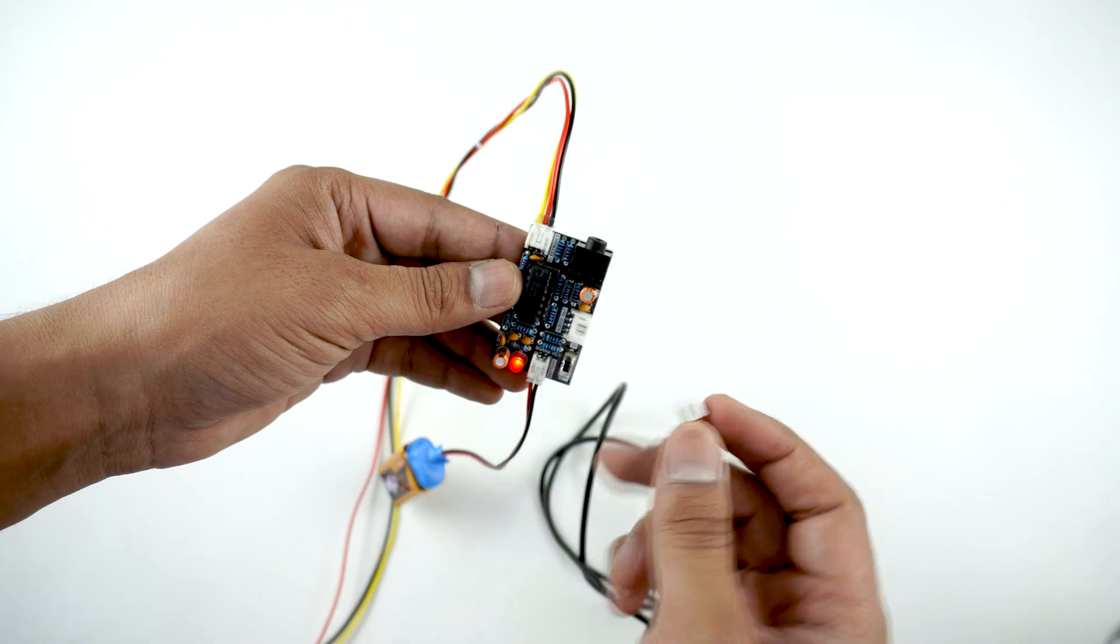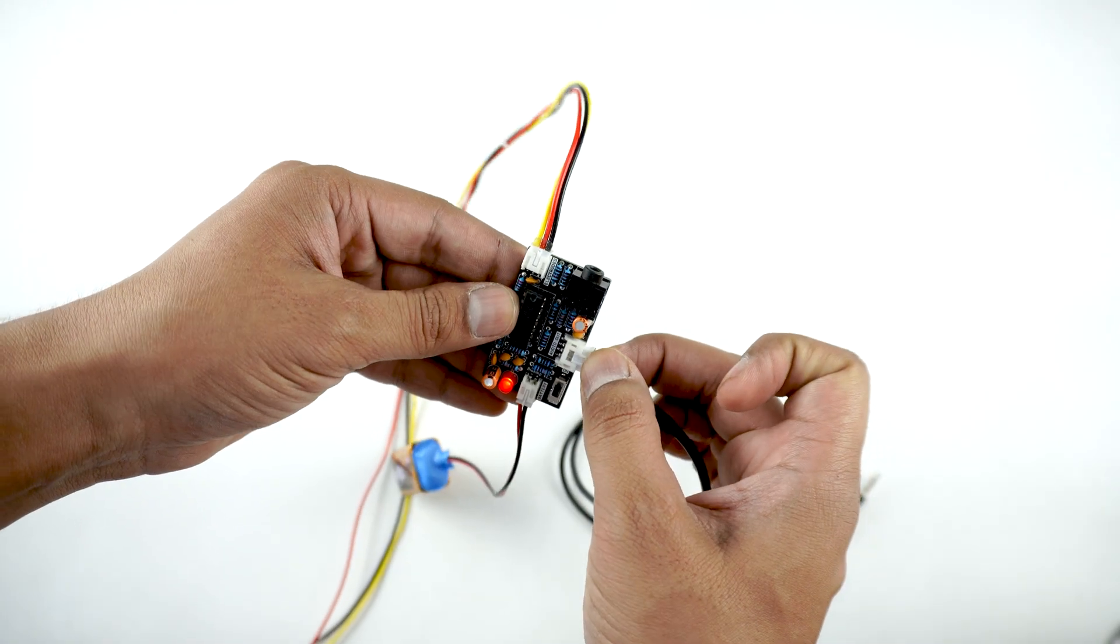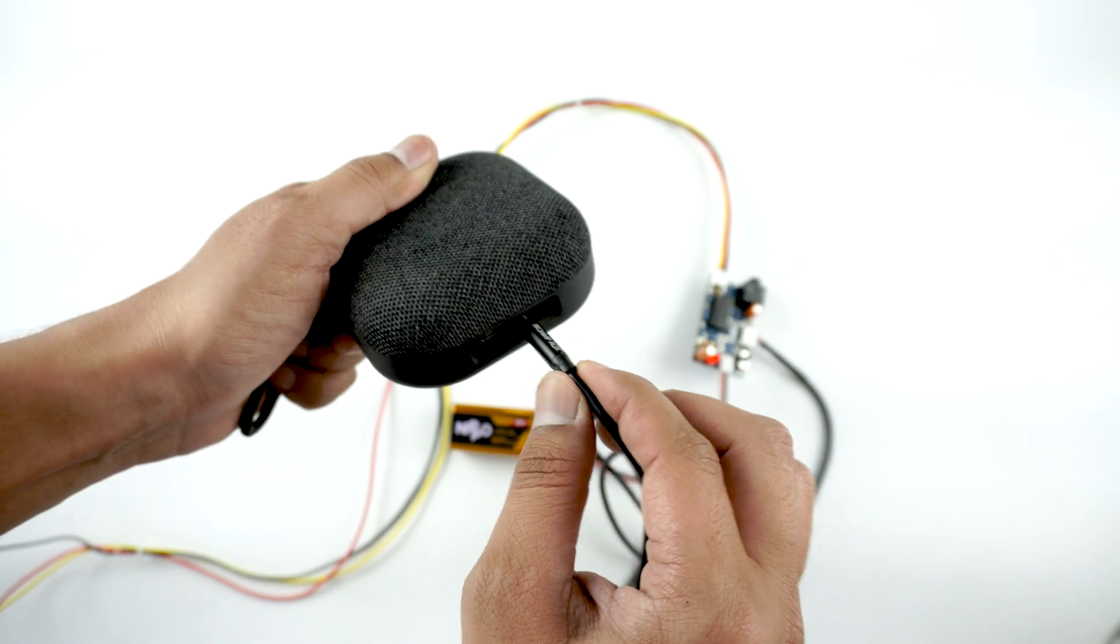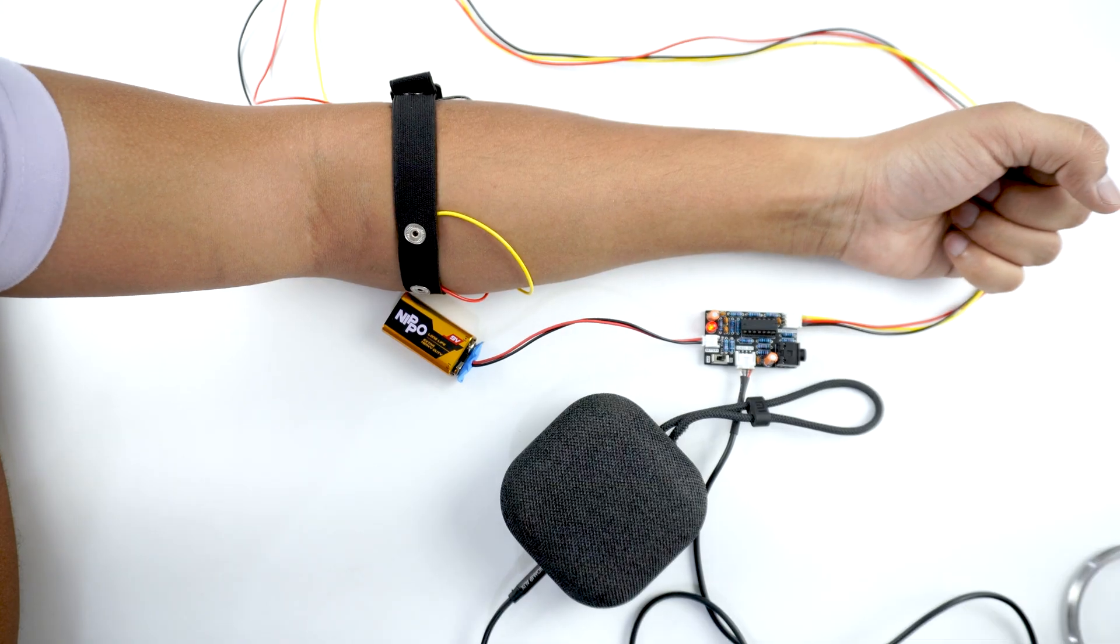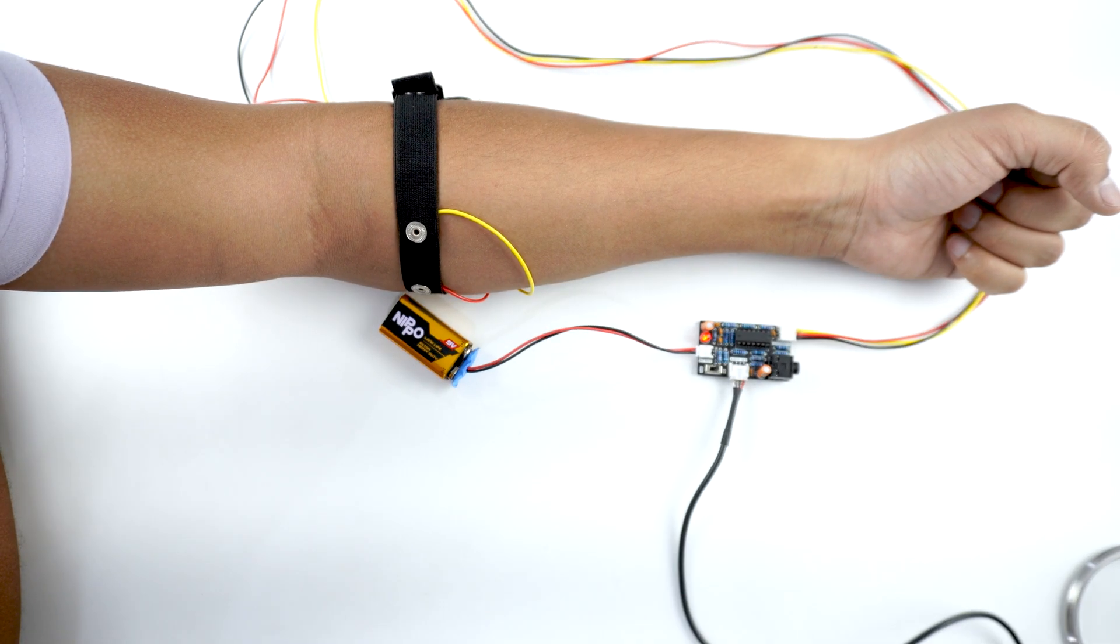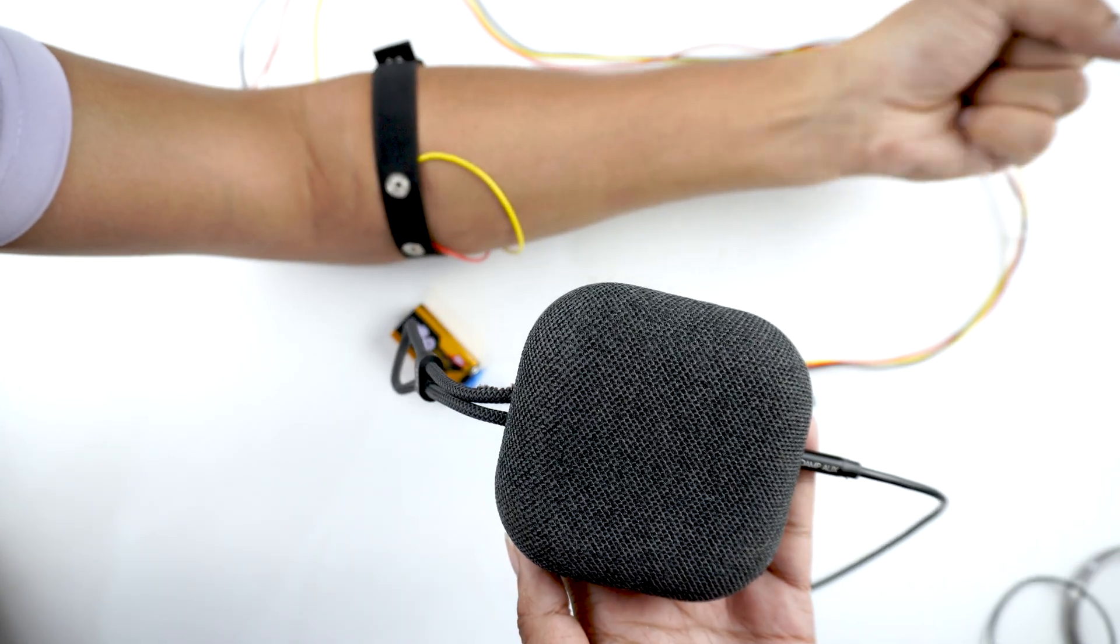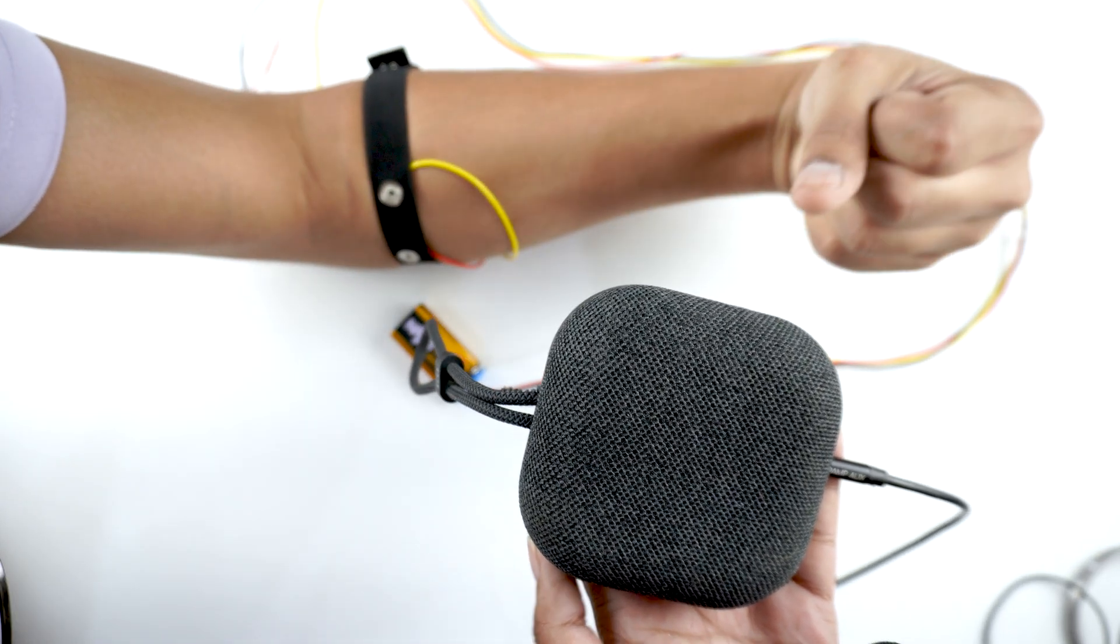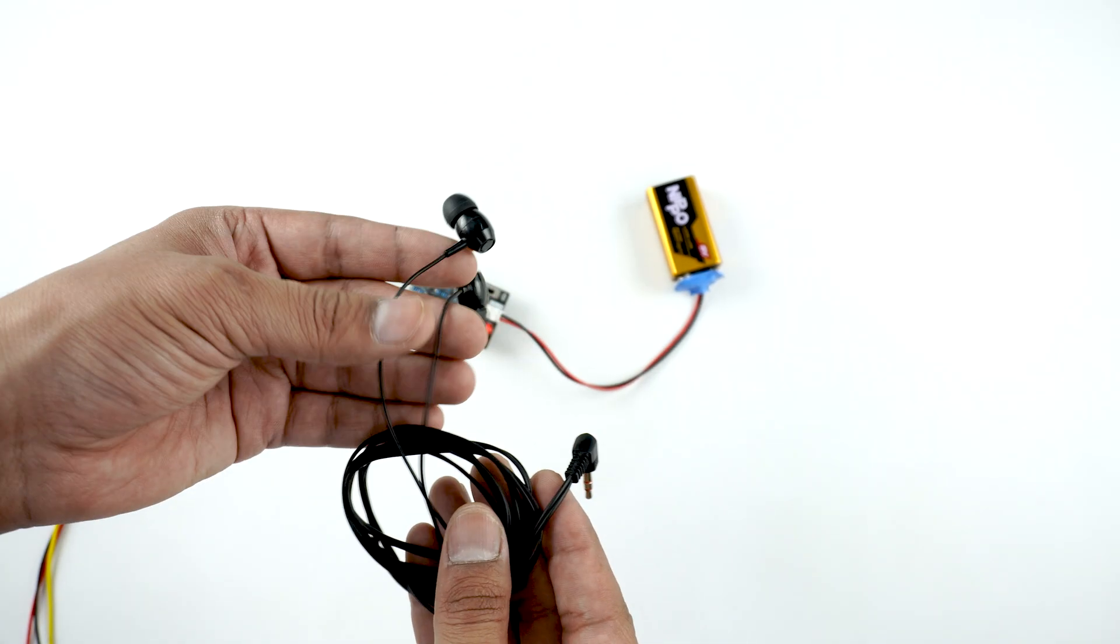Now comes the best part. Let's listen to the muscle signals. Connect the cable to this port via a four pin JST PH connector and plug the other end of the cable to 3.5mm jack of the speaker. Turn on the speaker and flex your muscles.